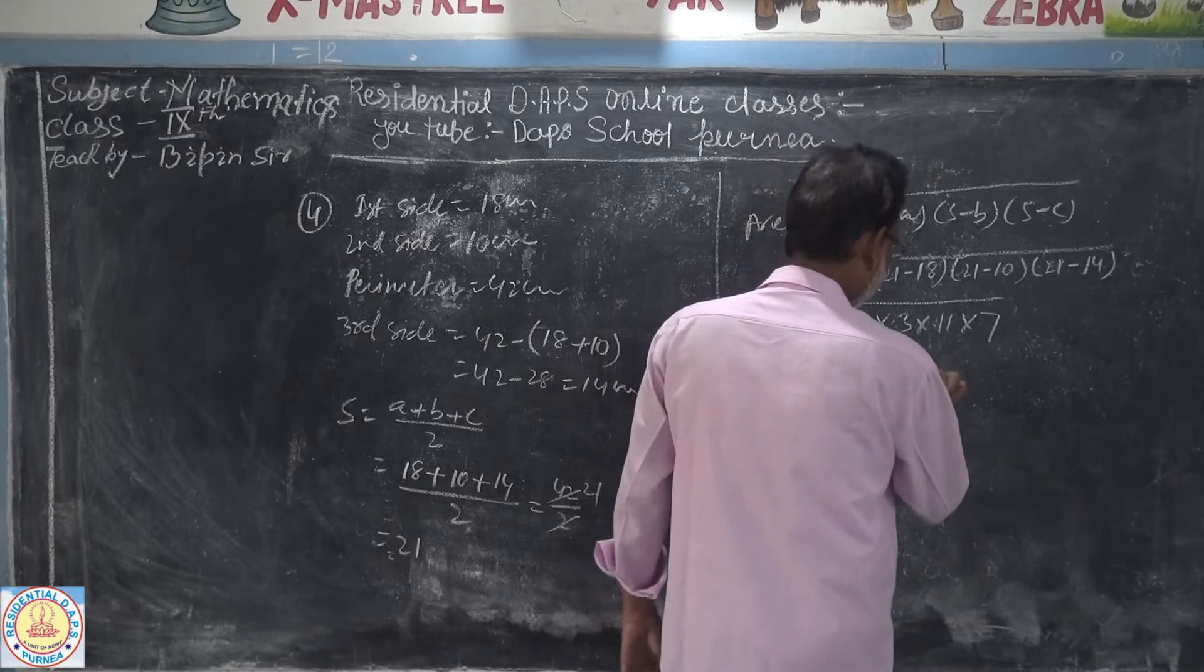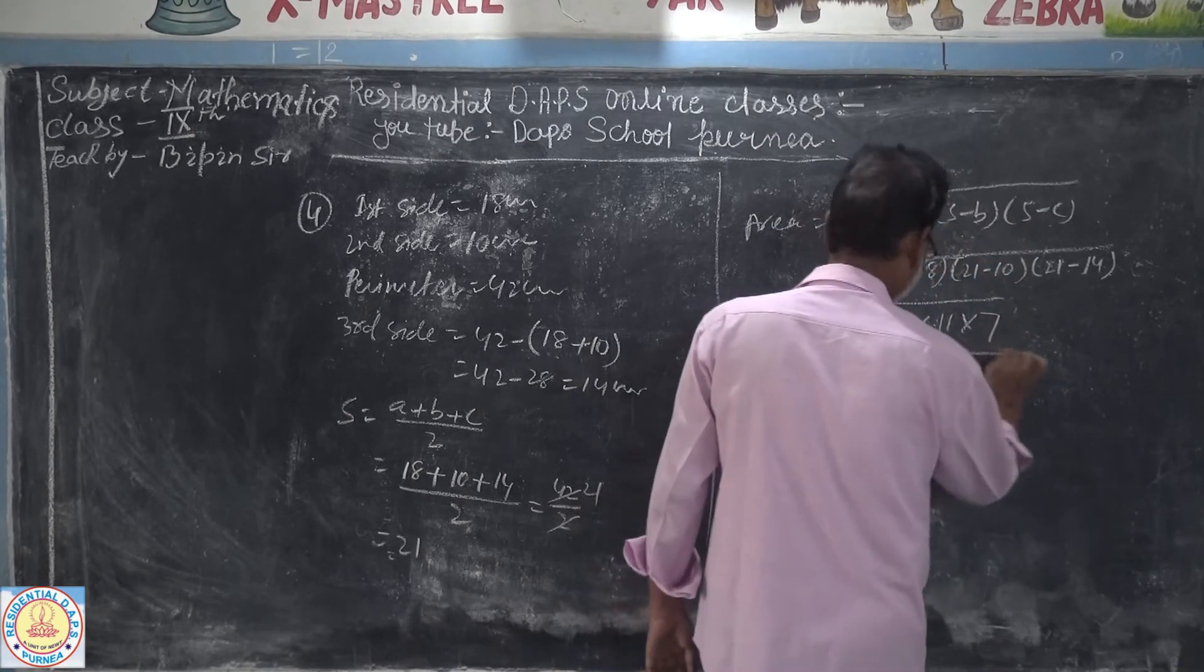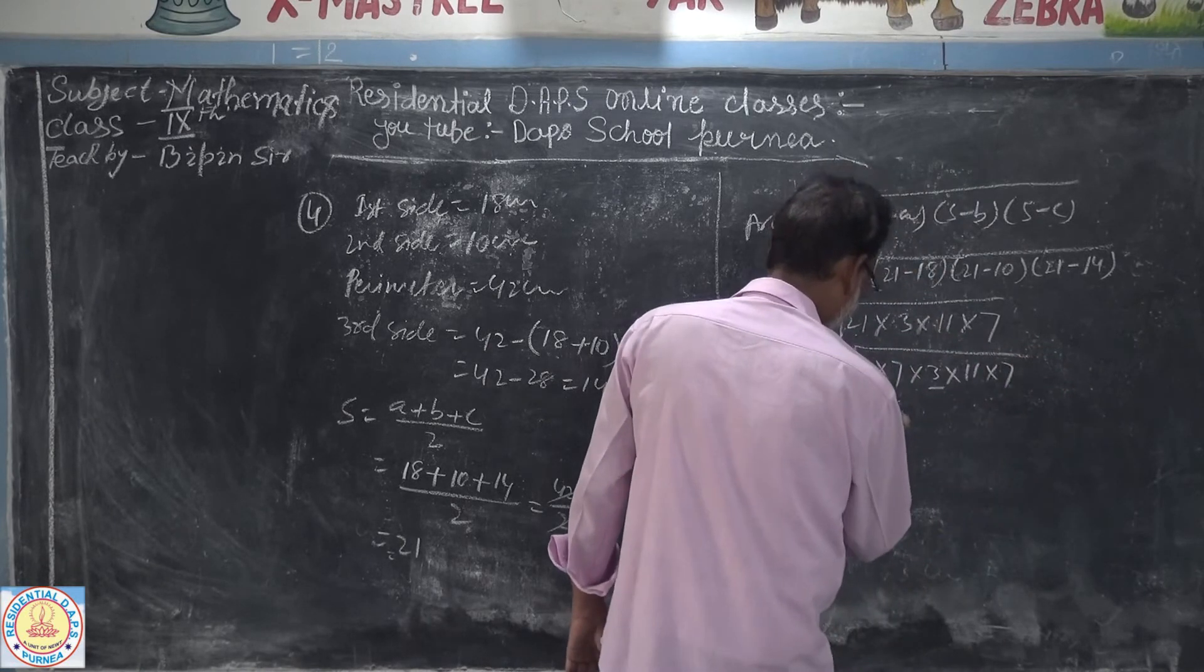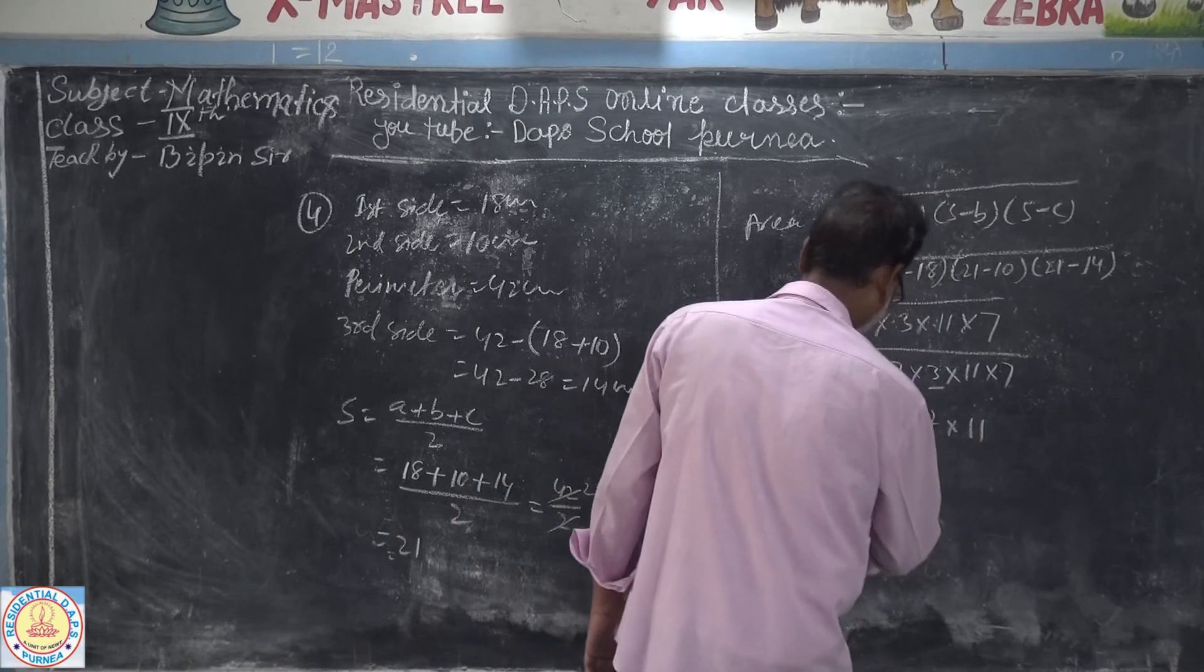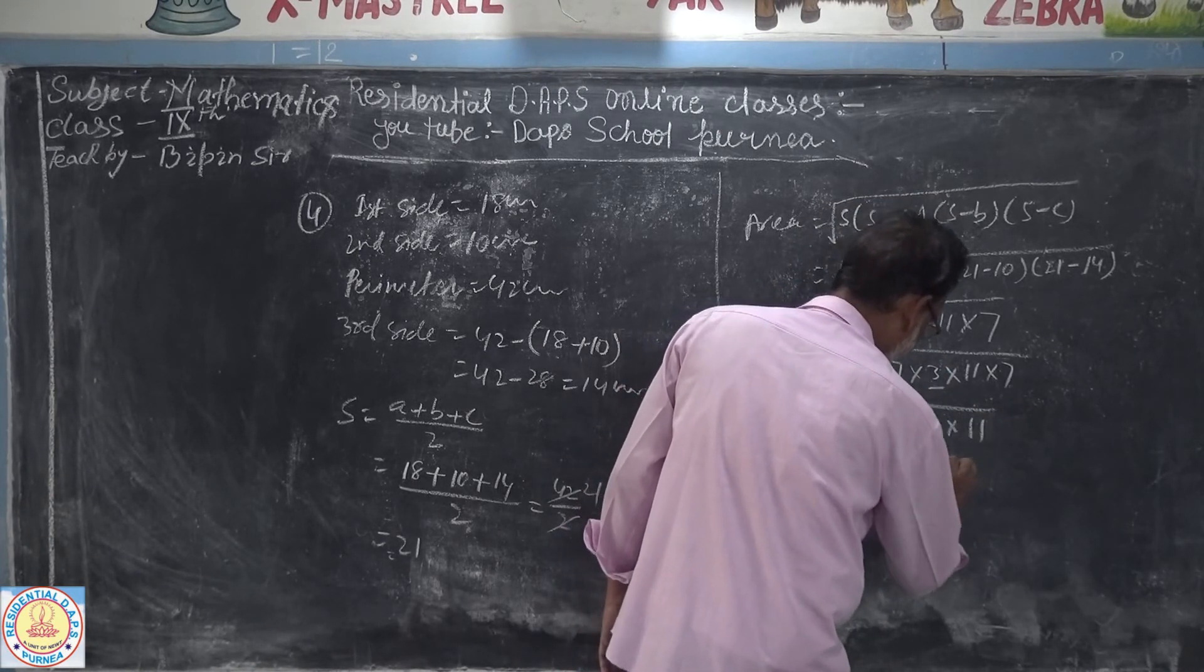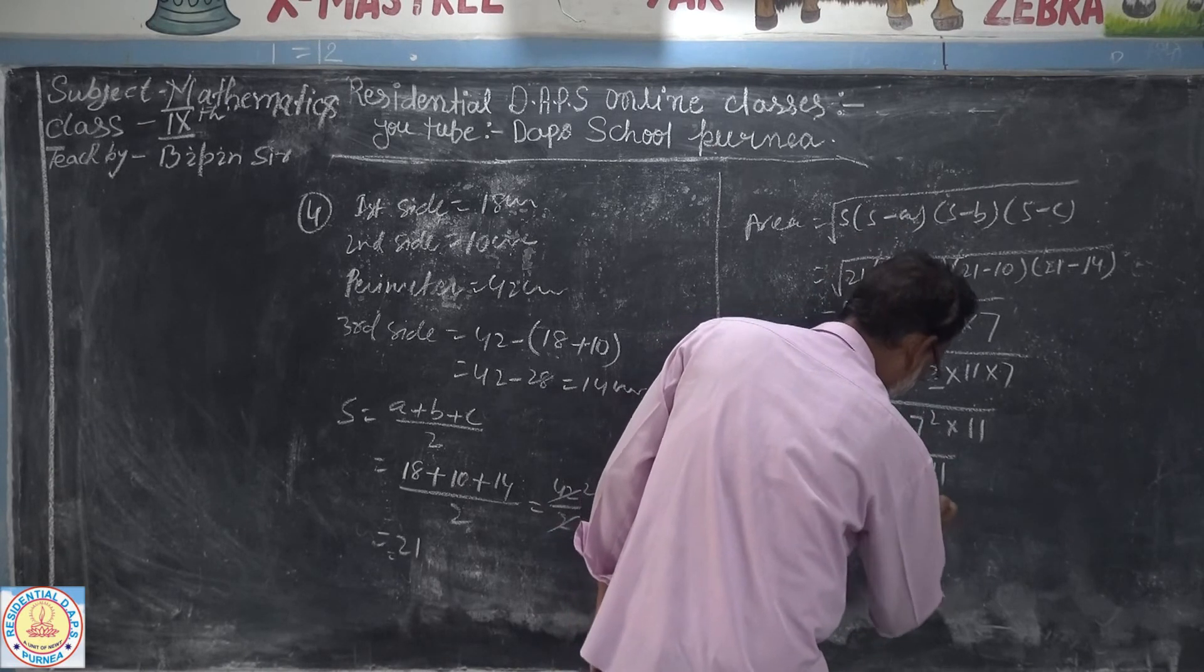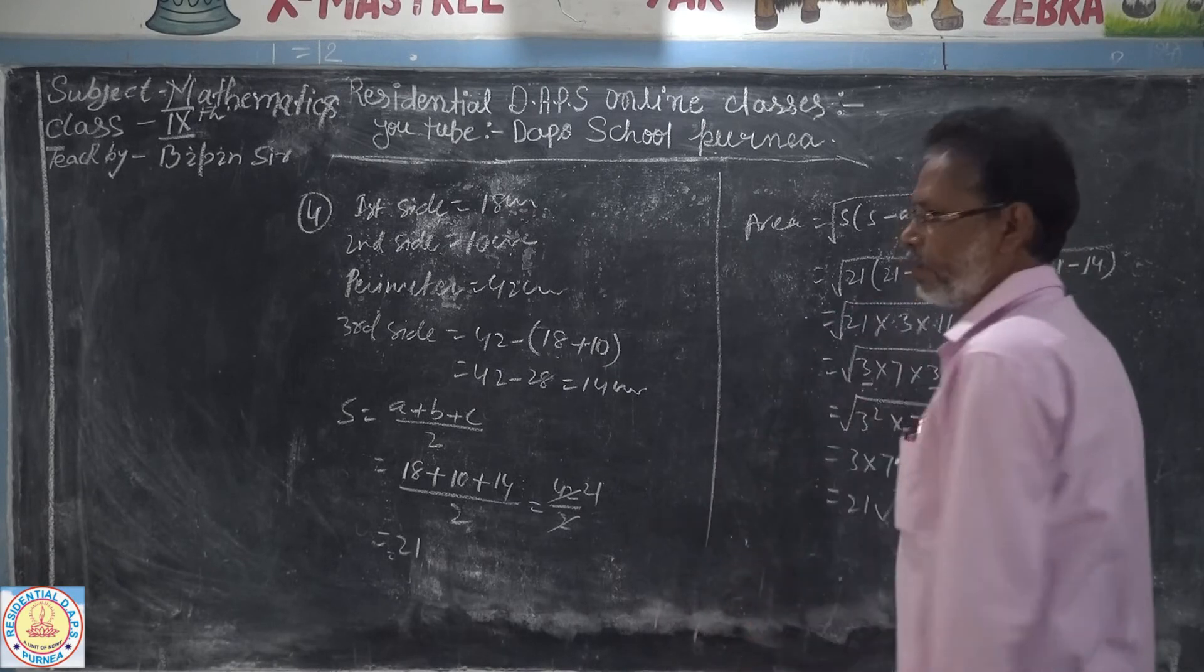This gives us 3 times 11 times 7, which is 3 squared times 7 squared times 11. Taking out the squares: 3 times 7 square root of 11, which equals 21 square root of 11 cm squared. That's your answer.